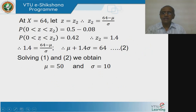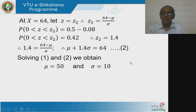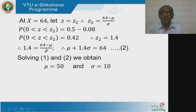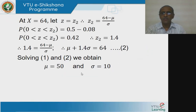The probability of 0 < z < z2 = 0.42. For this area, the value of z2 is given to be 1.4. Therefore z2 = 1.4. Substituting: 1.4 = (64 - μ) / σ, which simplifies to μ + 1.4σ = 64. Call this equation 2. Now solving equations 1 and 2 simultaneously in two unknowns μ and σ, we obtain mean μ = 50 and standard deviation σ = 10.